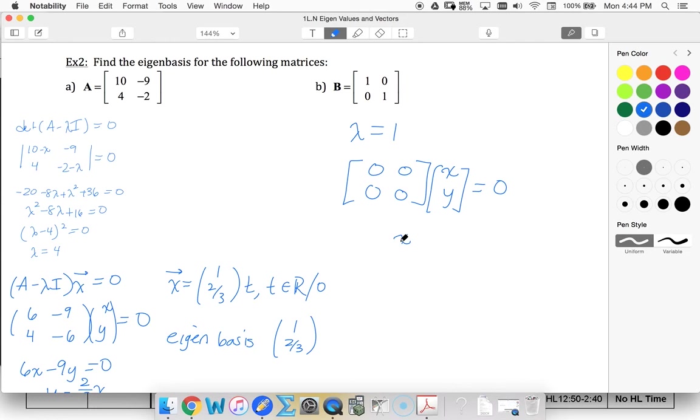So my vector X, Y, my solution vector, is going to be 1, 0 plus 0, 1. And I can have any multiple and they don't have to be the same multiple. That's why I'm not using T and S.